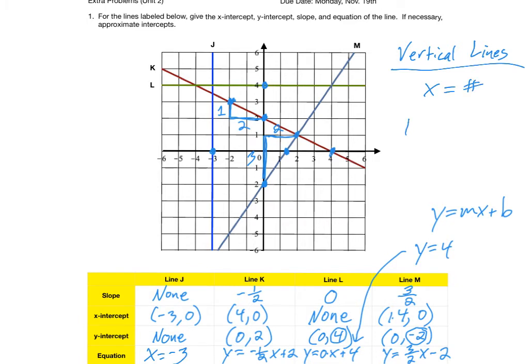All vertical lines have an equation of the form X equals some number. Technically, all horizontal lines, even though they do fit in the MX plus B form, because M is 0 for them, they ultimately look like Y equals a number. So you can see our horizontal line has the equation Y equals 4, and our vertical line has the equation X equals negative 3.